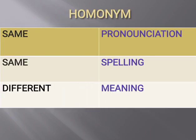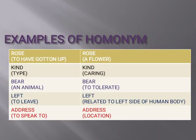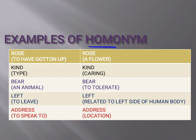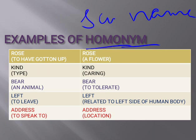Homonyms kya hain — same pronunciation, same spelling, but different in meaning. I will repeat: homonyms woh words hote hain jinki pronunciation same hogi, the way you produce the sound of these words is same, and the spellings — letters in words — same hote hain, lekin inki jo meaning hoti hai woh different hoti hai. Homo means same, aur name ka matlab hota hai naam.